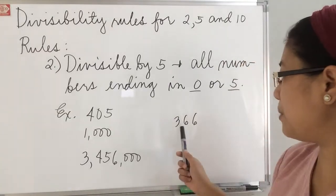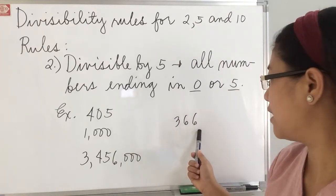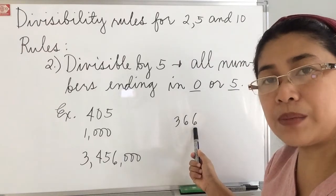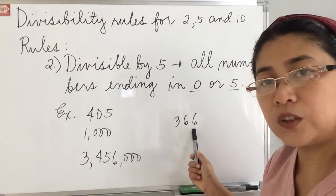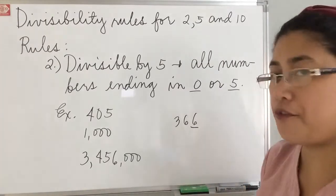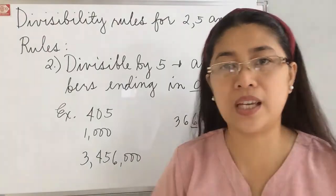How about this one? 366, so look at the one's digit, it is 6. Now, is it divisible by 5? No, because it is not 0 or 5. Therefore, this is not divisible by 5.